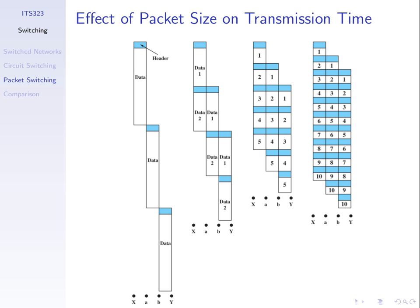One last thing: with packet switching, when switch 1 is sending packets to switch 2, switch 2 can be sending packets to another switch simultaneously. From switch 2's perspective, it's receiving packets on one link and sending packets at the same time on another link. This diagram tries to illustrate that packet size impacts the total delay for delivering the data. Because when we have multiple links — X to A, A to B, B to Y — we can be transmitting packets on one link at the same time as receiving on the prior link. Depending upon the packet size, we can reduce the delay to transmit all of the data.